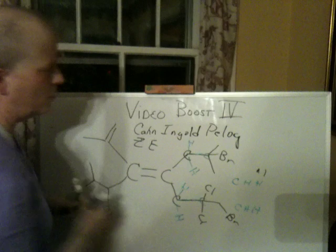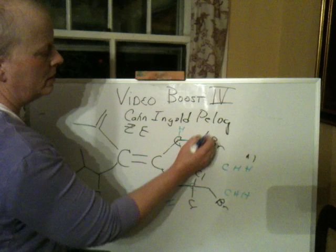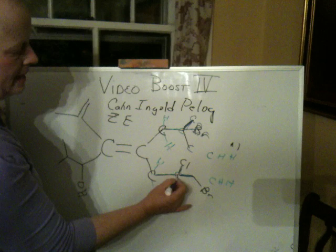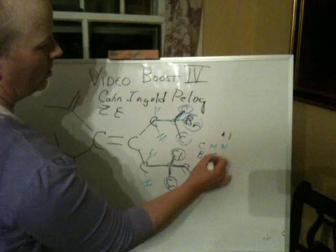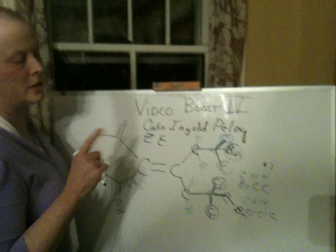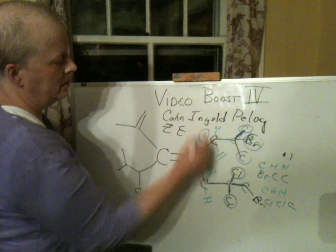Three bonds away (written in blue): on one branch it's bromine, carbon, carbon; on the other branch, ordering by atomic number, it's chlorine, chlorine, carbon. I did this on purpose so you'd see how it works. Bromine beats chlorine — that's the end of it. You're done; it's not like you're adding these up. Bromine beats chlorine, so this branch gets top priority, and the other gets number two priority.